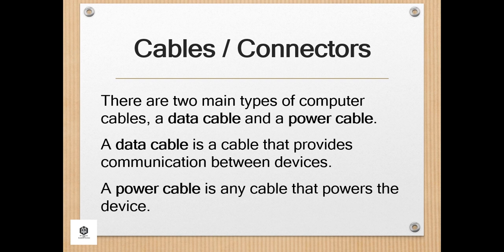There are two main types of computer cables: a data cable and a power cable. A data cable provides communication between devices. For example, data cables such as DVI, HDMI, or VGA connect your monitor to your computer to display a picture. Other popular examples of data cables include IDE or EIDE, SATA, and USB cables. A power cable is any cable that powers the device — for example, the power cord that connects to your computer, or a Molex-style cable inside the computer.